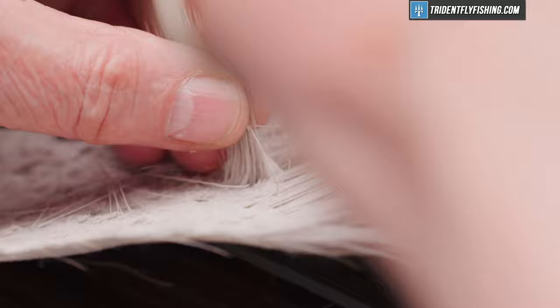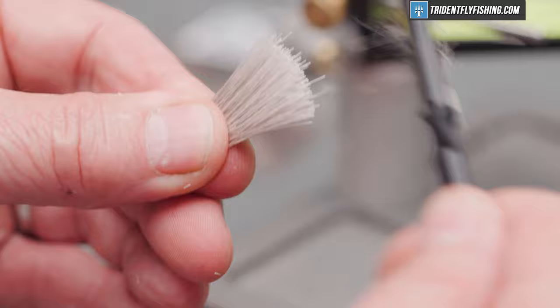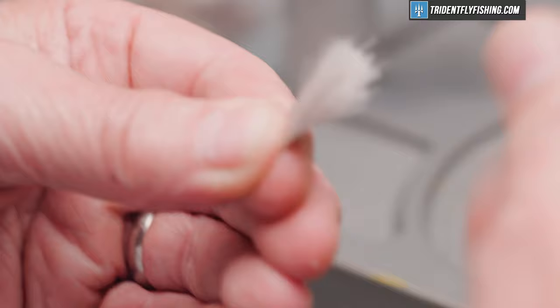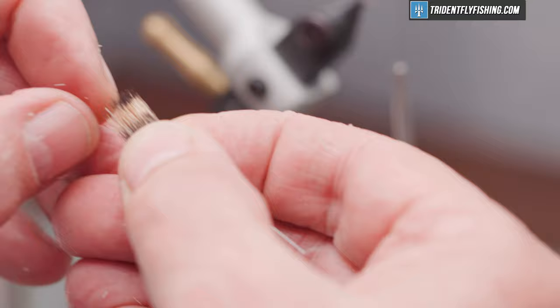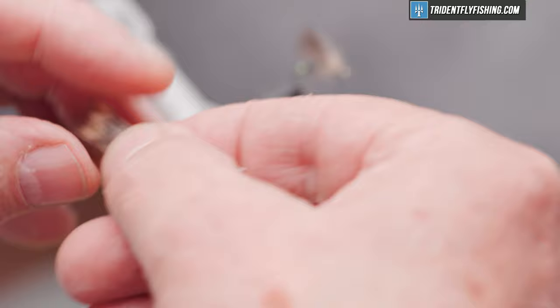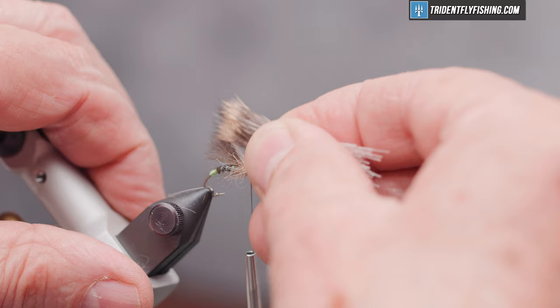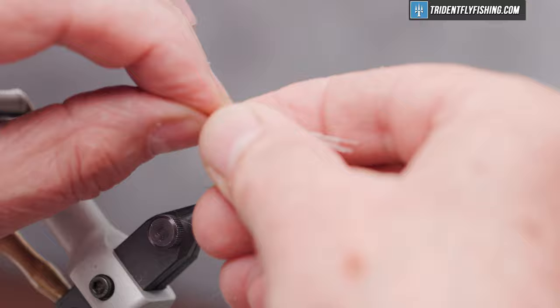Just going to be some natural deer hair. And we'll cut a clump out that's maybe a half a pencil width in diameter. Got our hair stacker tool here and rid of all the short fuzzy stuff. Put it in a stacker. Tips all evened up nice. Got a few broken hairs in there. That looks pretty good. I'm going to measure this out to be just back to the edge of the back of the hook. A little longer than that underwing.